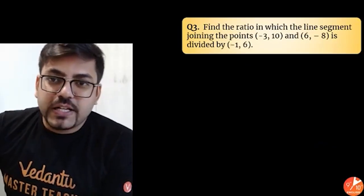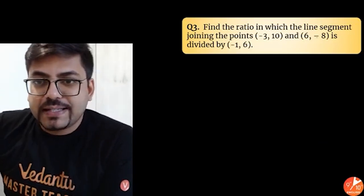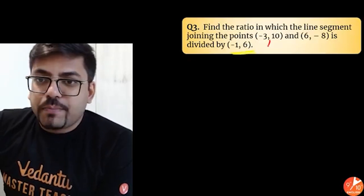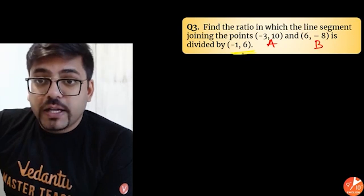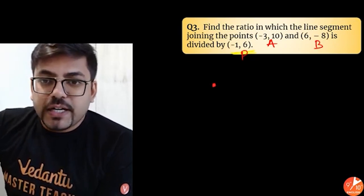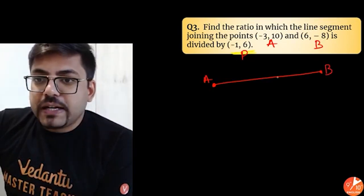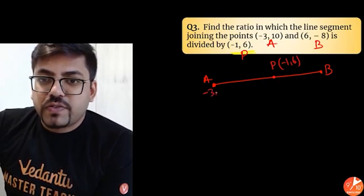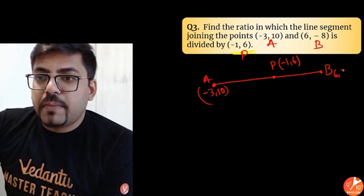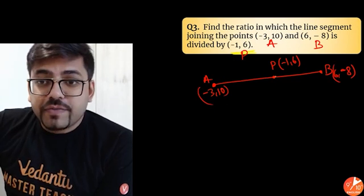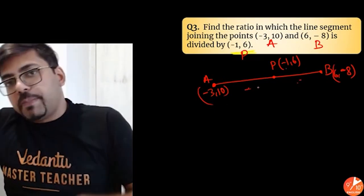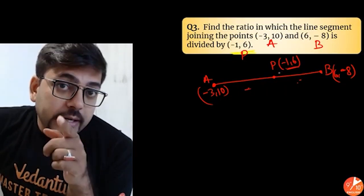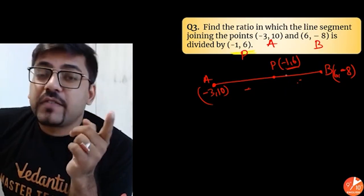Here is the next question: find the ratio in which the line segment joining these points is divided by (minus 1, 6). So you have point A, point B, and a dividing point P. The coordinate of P is given as (minus 1, 6), A is (minus 3, 10), and B is (6, 8). In the previous question ratio was given and we were finding the point. But right now this has been reversed — the point is given and we have to find the ratio.